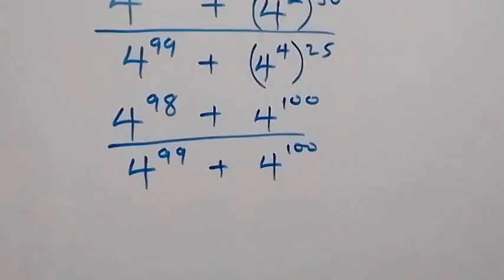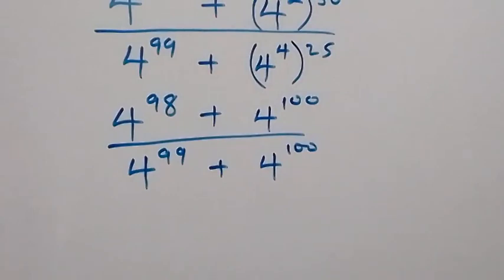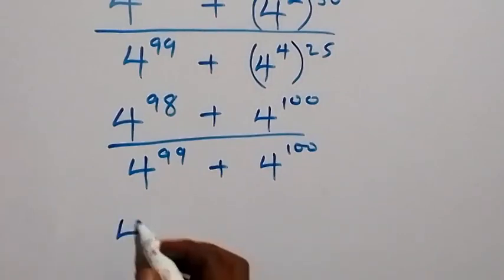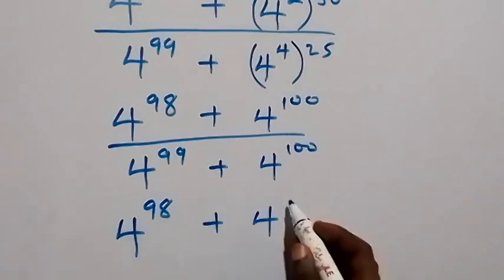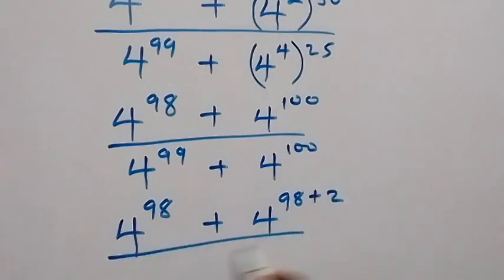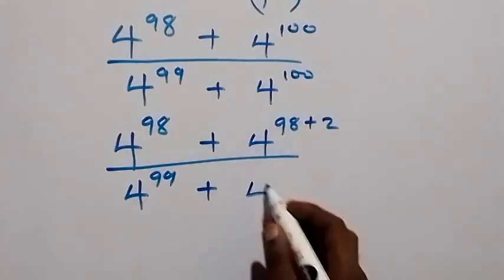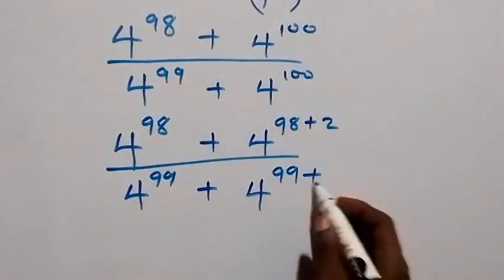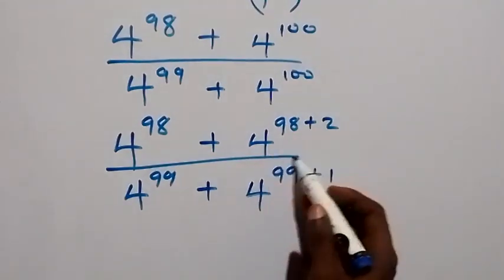Next, we can separate 100 as 98 plus 2, so we have 4 raised to power 98 plus 4 raised to power 98 plus 2, divided by 4 raised to power 99. We can also separate 100 as 99 plus 1, giving us 4 raised to power 99 plus 1.